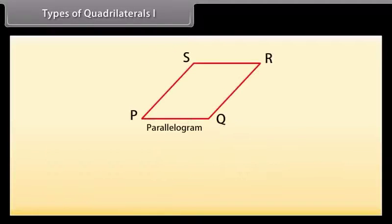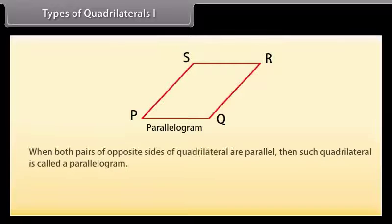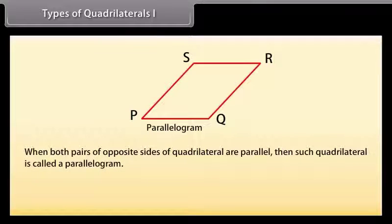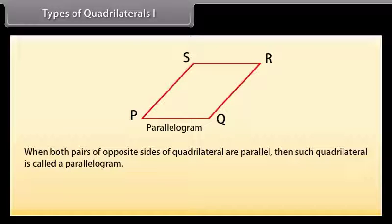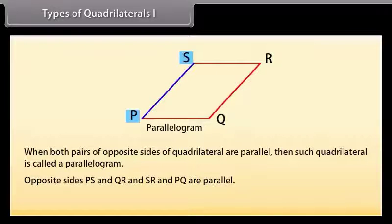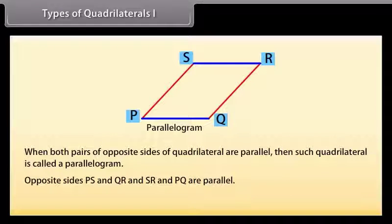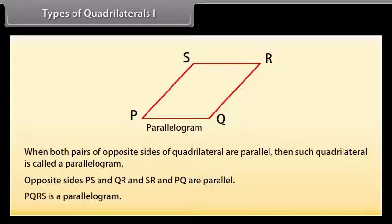Next is parallelogram: when both pairs of opposite sides of a quadrilateral are parallel, then such a quadrilateral is called a parallelogram. Here opposite sides PS and QR, and SR and PQ are parallel, so PQRS is a parallelogram.